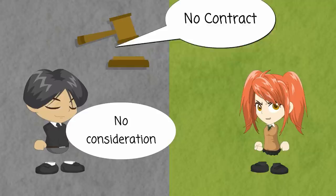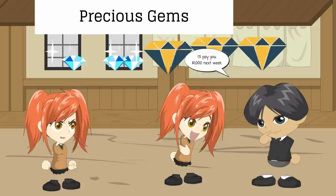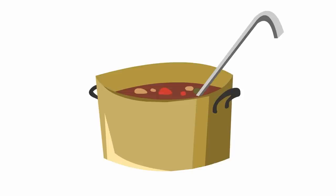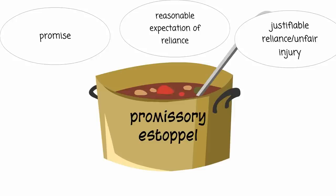There is no consideration for the uncle's promise, and if there is no consideration, wouldn't a court say there was no contract? But the situation seems pretty unfair. After all, the uncle did make a promise, and he should have expected Patty to rely on that promise, and Patty's been injured. Where we have a promise, a reasonable expectation of reliance on that promise, and some sort of injury that appears unfair, a court might apply promissory estoppel.